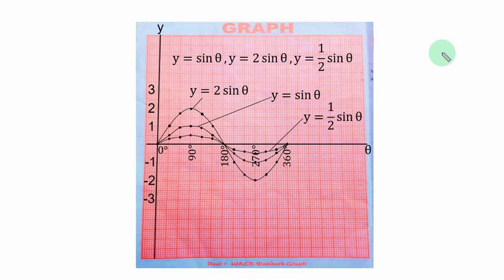Here you can see the complete graph for the three functions. The upper curve is for y = 2 sin θ. The middle curve is for y = sin θ. The curve with the smallest amplitude — first from the x-axis — is y = ½ sin θ. It is a step-by-step approach. If you try to plot the three functions at the same time it will be confusing. After you plot the first one you join the points, then the second, then the third.